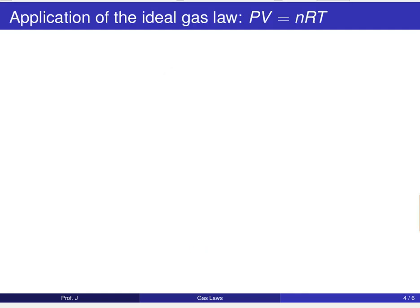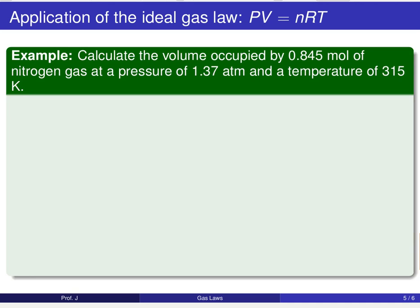But the ideal gas law allows us to take things a step further and solve a different type of problem. So let's go ahead and take a look at that, the kind of problems that we can solve using our PV equals nRT. So the first problem we're going to look at requests us to calculate the volume occupied by a given number of moles of nitrogen gas at a pressure 1.37 atm and a temperature of 315 kelvin.